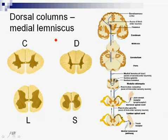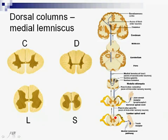The dorsal columns bring information of epicritic touch, vibration, and conscious proprioception. The first neuron is situated in the dorsal root ganglion and will ascend. This time the second neurons are not at the same level — they are situated in the medulla oblongata.